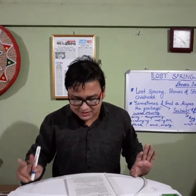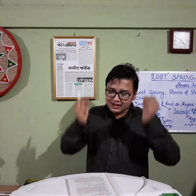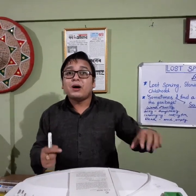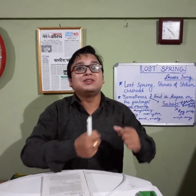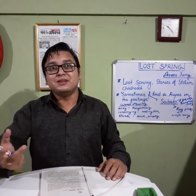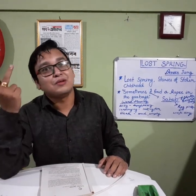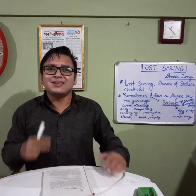In Seemapuri, Saheb was doing rag picking with a gang of boys similar to his own profession. They belonged to the same profession — rag pickers like Saheb. That's why they left, looking for gold in the big city where he now lives. Here, 'gold' means rupees — money is referred to as gold for Saheb. That is the style of writing.